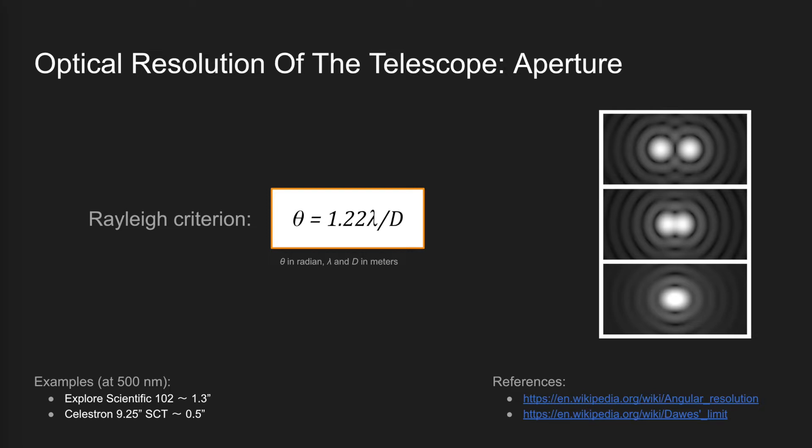Of course, if you've ever done any kind of deep sky imaging, you know that there are many gating factors that prevent us from reaching these numbers. For all practical purposes, the diameter of the telescope is not really that important for resolution, except for gathering more light and therefore reducing the total exposure time or increasing the signal-to-noise ratio that you can attain.